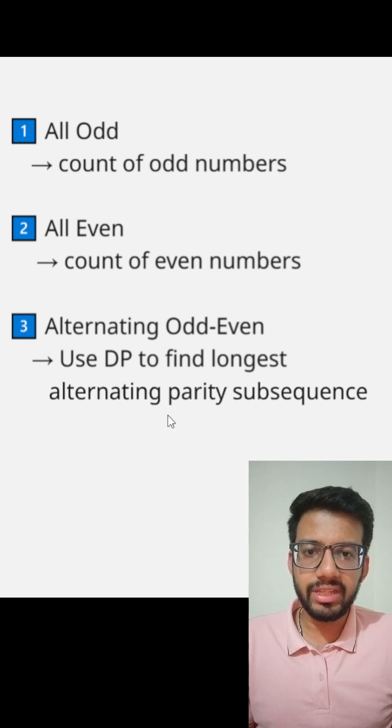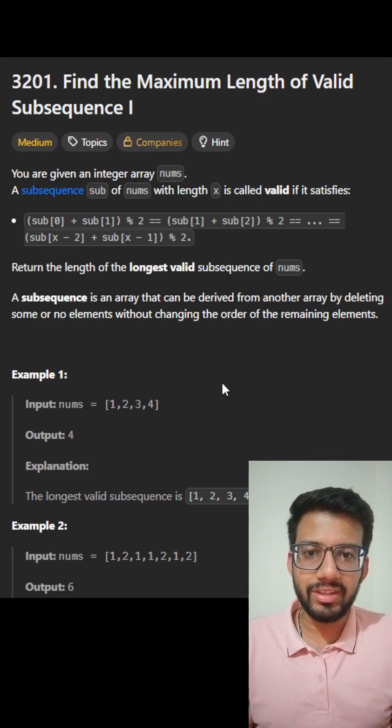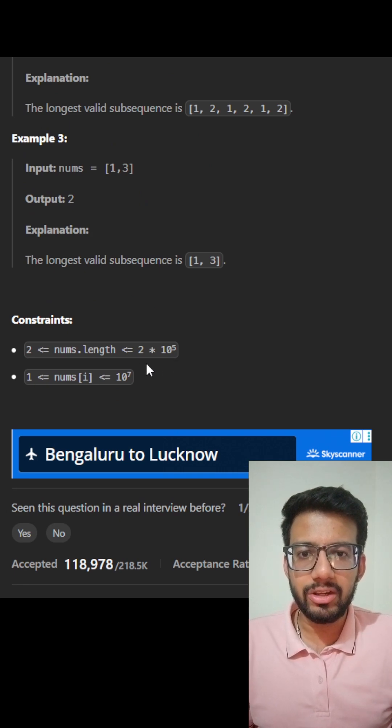Like I think about this, the first thing that comes to my mind is using dynamic programming. But I think I've made a mistake, that is to see the constraints. If we see the constraints, we'll see the length of the array can be as big as 10 to the power of 5. In that case, if we have two for loops, that won't work. Then how do we solve this?